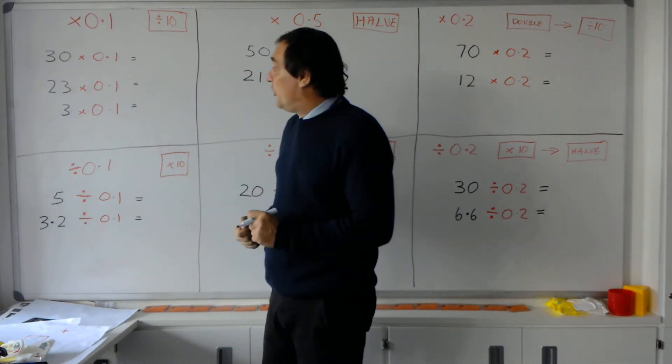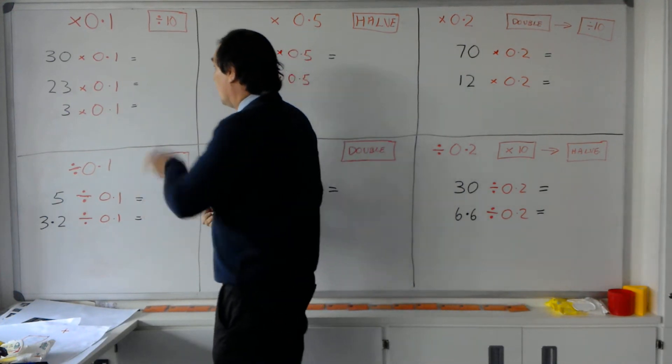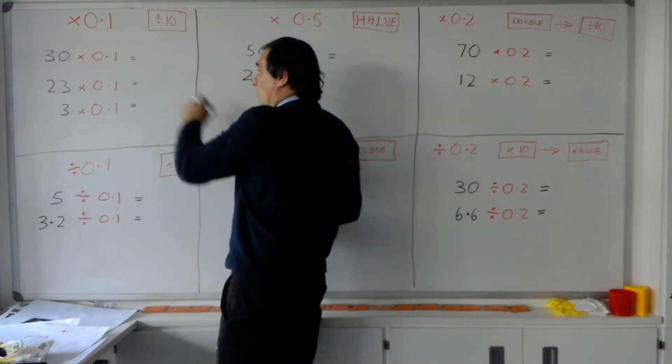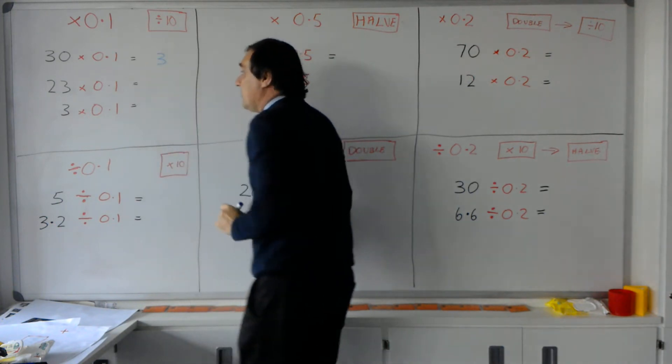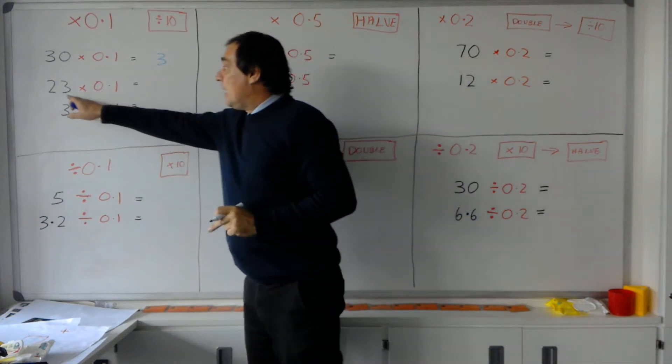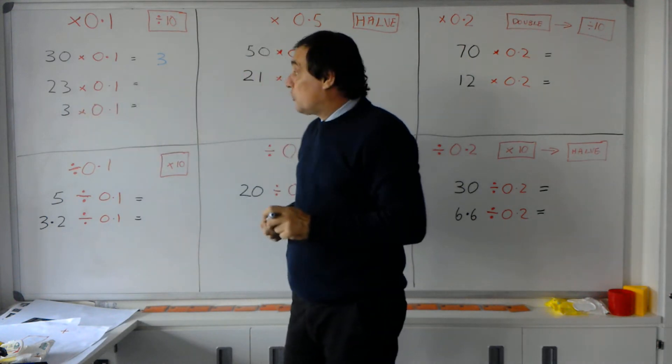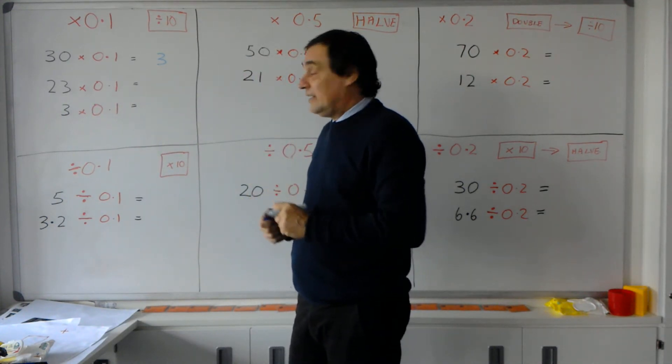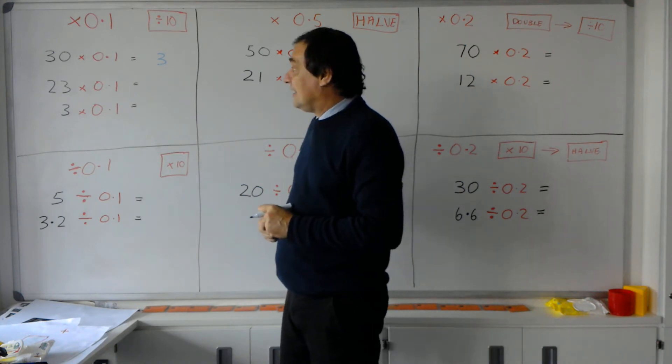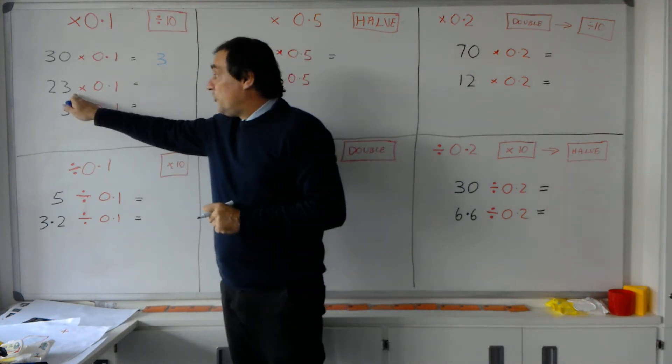Having a look, 30 times by 0.1 is the same thing as 30 divided by 10, so 30 divided by 10, we can remove the zero or move one place, so that becomes 3. In the same way, let's look at this example here: 23 times 0.1 means I've got to do 23 divided by 10.